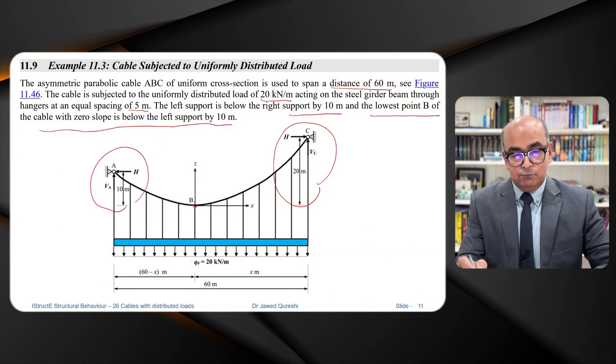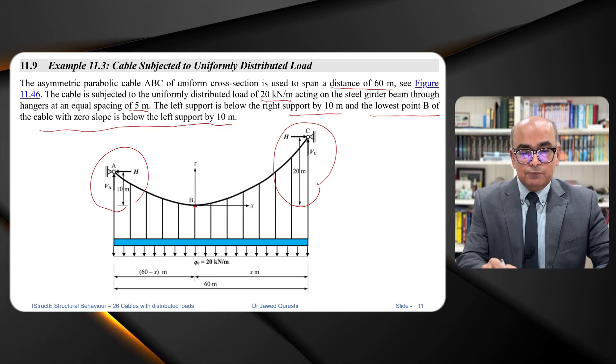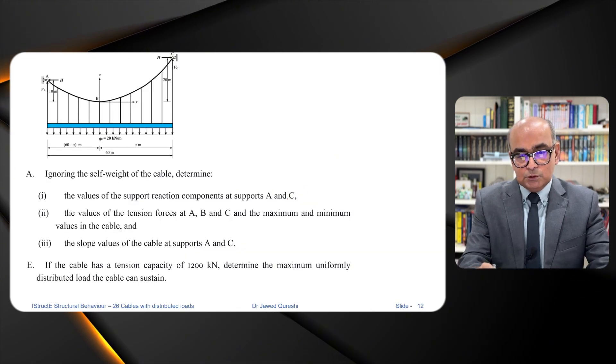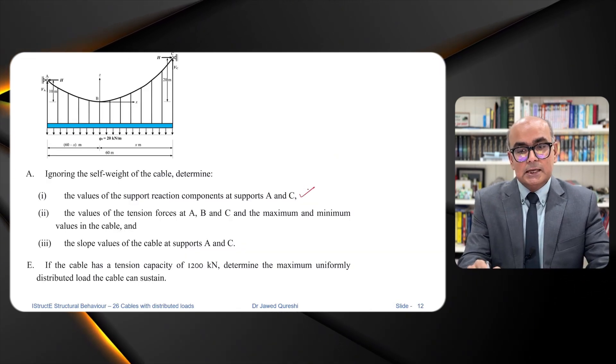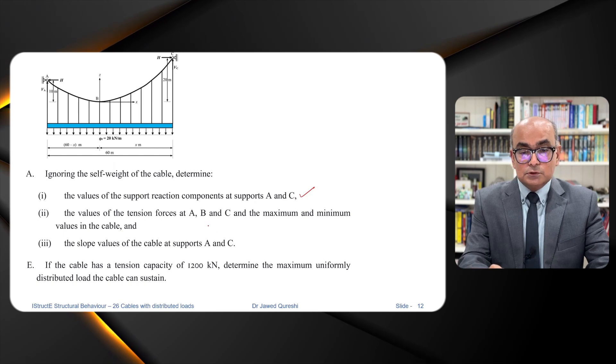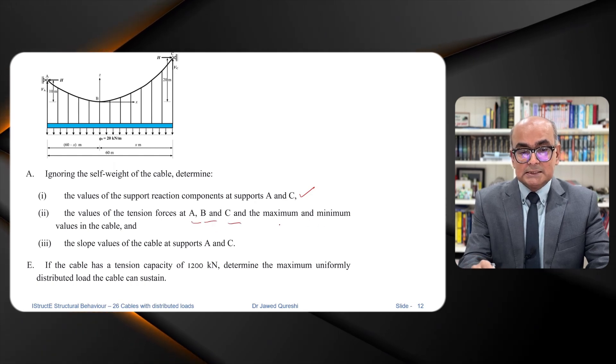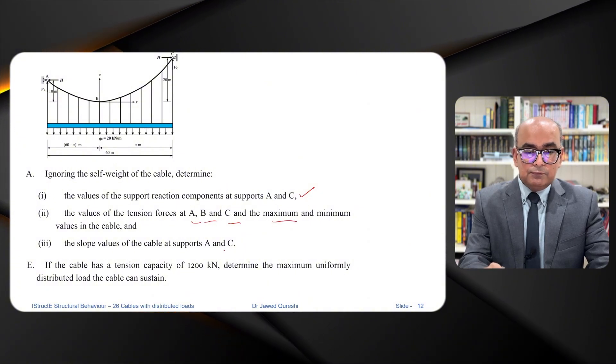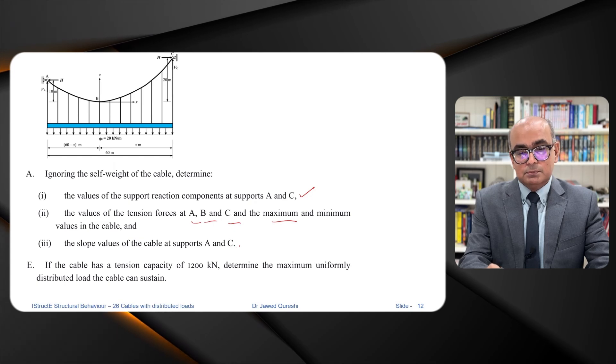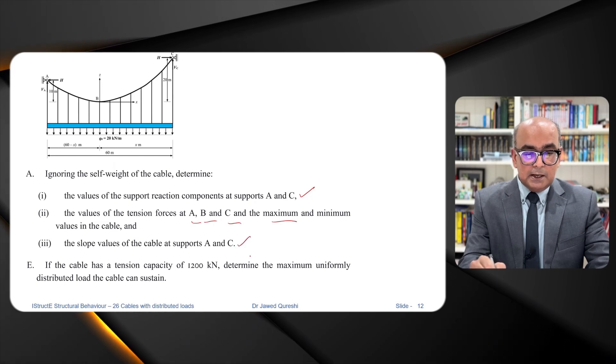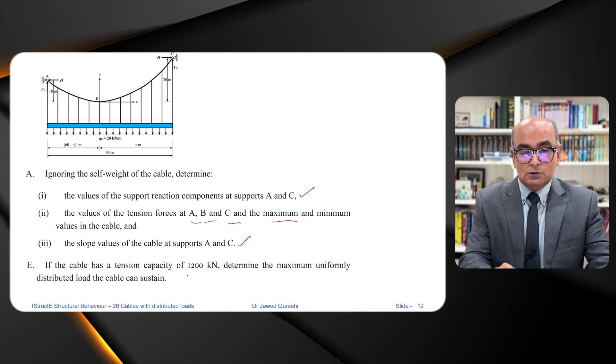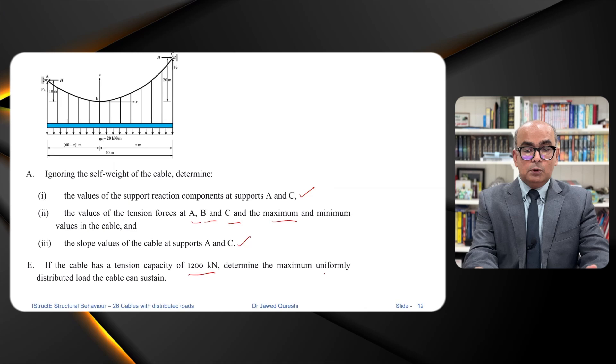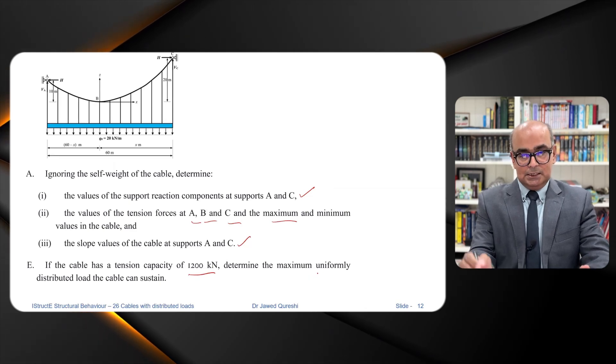And this is the point where you just have horizontal force. You don't have any vertical force over here. The first thing would be to find out the position of this X. We have to find out the value of support reactions A and C, values of tension at A, B and C and the maximum and minimum values in the cable. And also we have to find out the slope of the cable at support A and C. Part E says that if the cable has a tension capacity of 1200 kilonewton determine the maximum uniformly distributed load that can be taken by the cable.